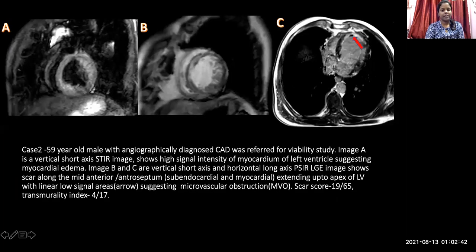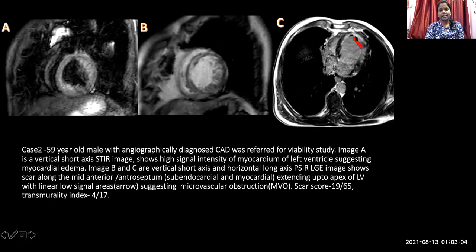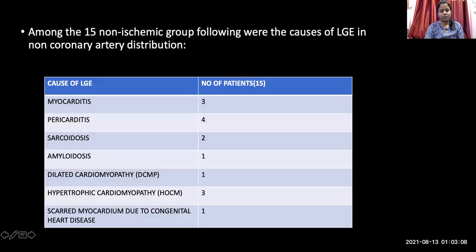The second case is a 59-year-old male with angiographically diagnosed coronary artery disease who was referred for a viability study. Image A is the vertical short axis STIR image showing myocardial edema. The B and C images are the post-contrast gadolinium-enhanced images showing sub-endocardial to mid-myocardial scar extending up to the apex, with a low-signal area in the left ventricular wall suggesting microvascular obstruction.